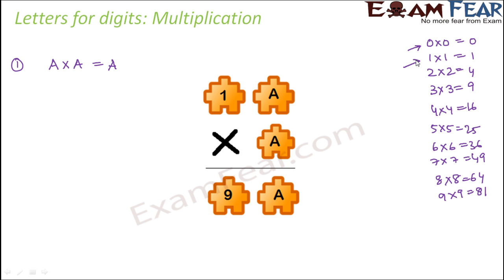So 0 is a possibility, 1 is a possibility, 5 is a possibility, and 6 is also a possibility, because for all of them the units digit of the square is the same digit. Now let us try all these options.